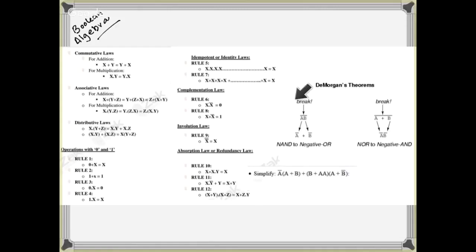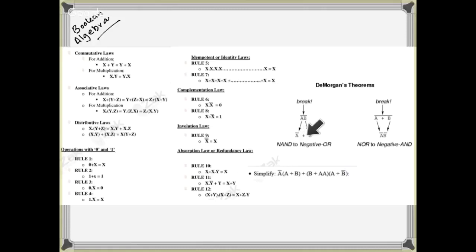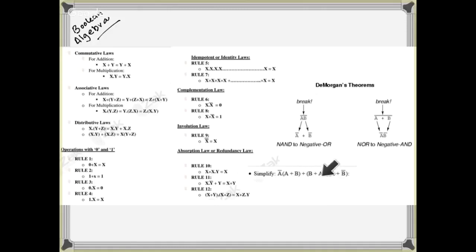Then we have De Morgan's theorem. De Morgan's theorem says that if it is (AB) whole-not, then it becomes A-not plus B-not. And if it is (A plus B) whole-not, then it becomes A-not multiplied by B-not.